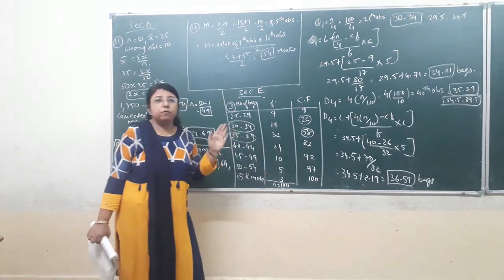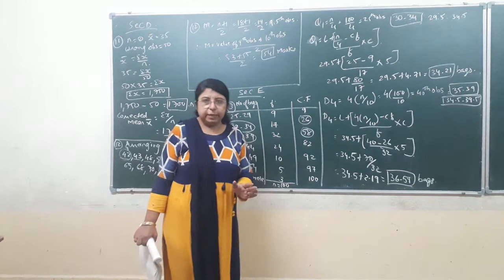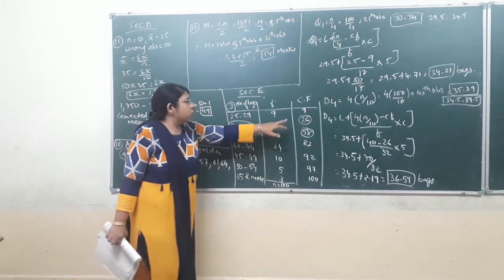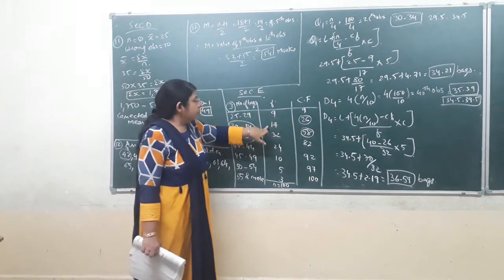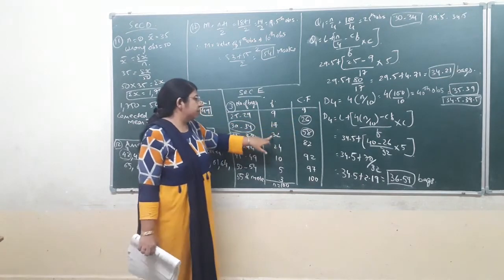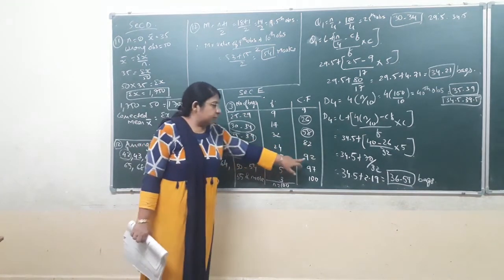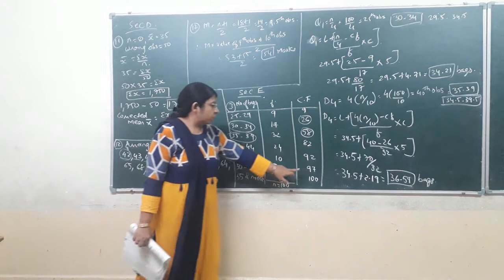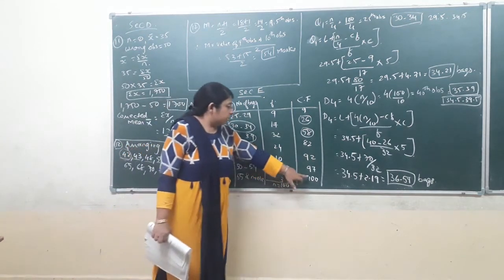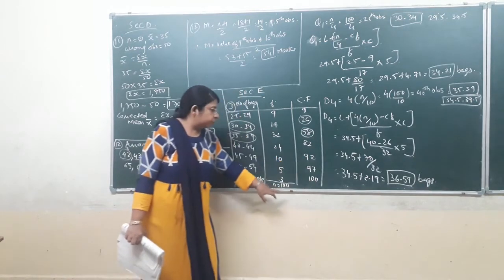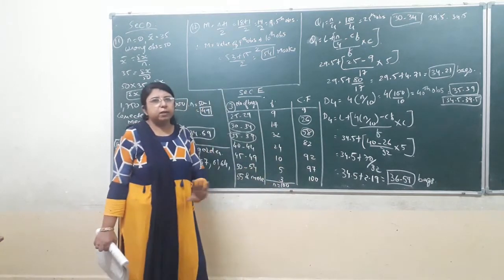On the basis of CF only can you find that particular decile class, median class, quartile class, or percentile class. Now finding the CF: the first value would be as it is, that is 9. 9 plus 17 is 26. 26 plus 30 is 56. 56 plus 24 is 80. 80 plus 10 is 90. 90 plus 5 is 95. And 95 plus 3 will come to 98. The last value of CF should be equal to the total number of frequency, that is 100. So our answer for CF is correct.